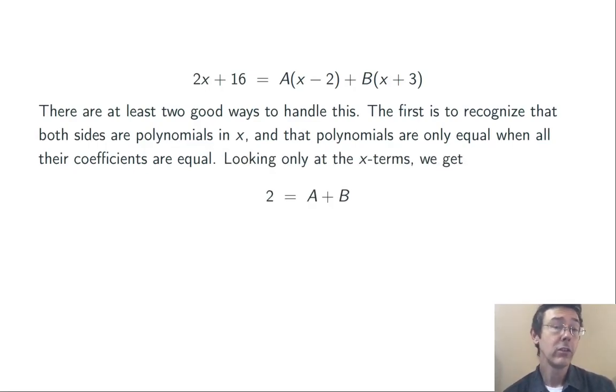So if we just look at the x terms here, on the left I have 2x, on the right I have Ax plus Bx. So 2 has to equal A plus B in order for the coefficient of x to be the same on the left and right.